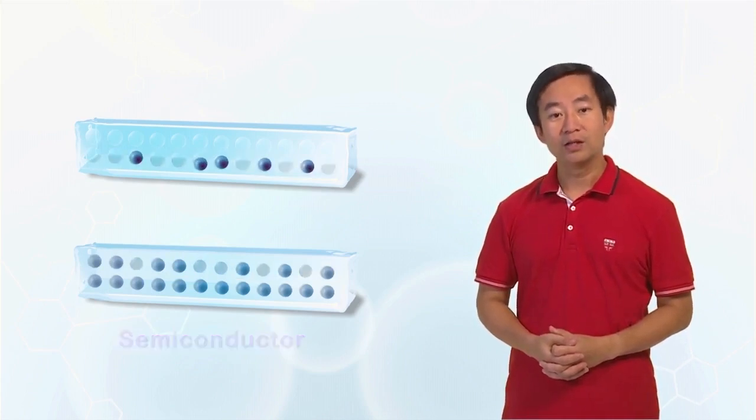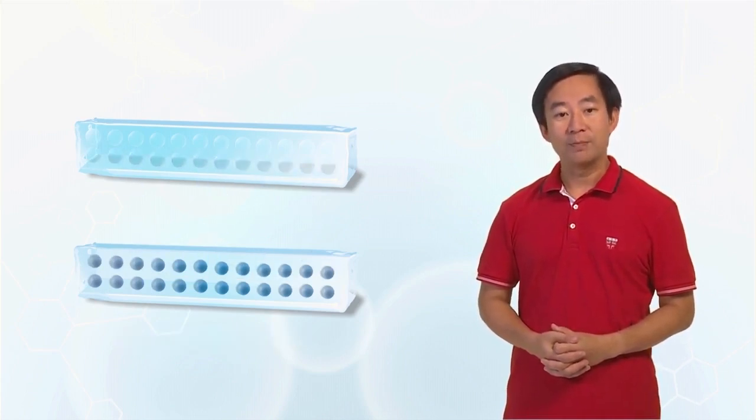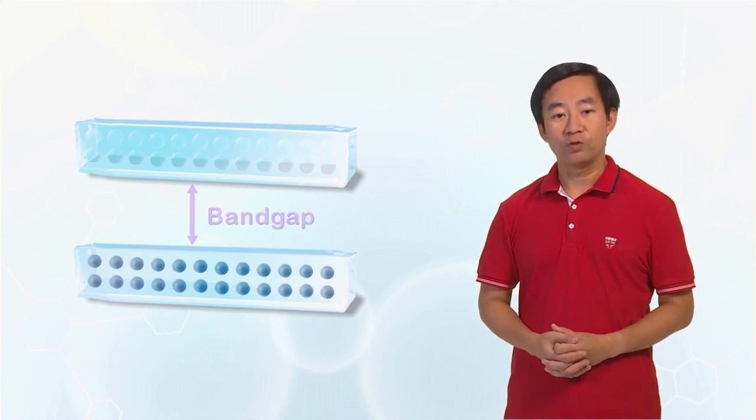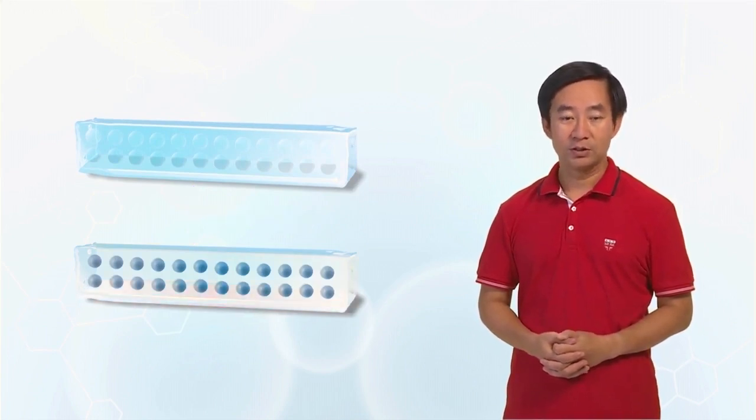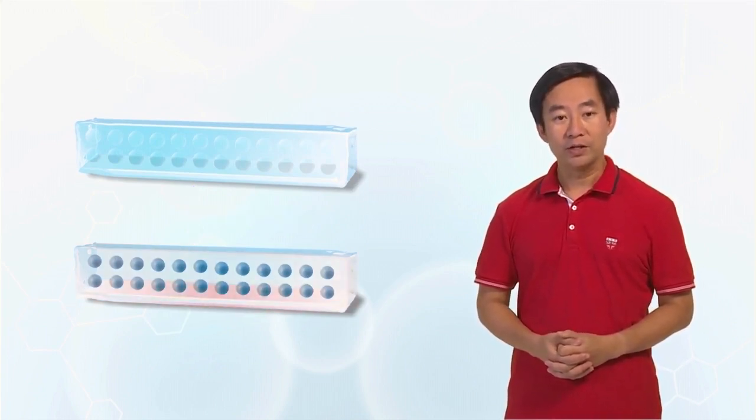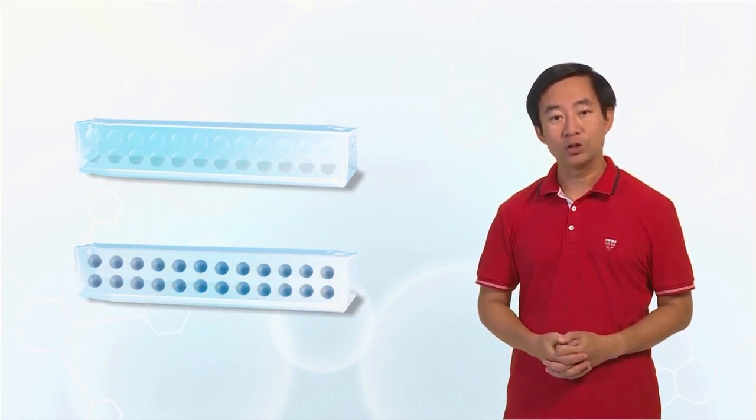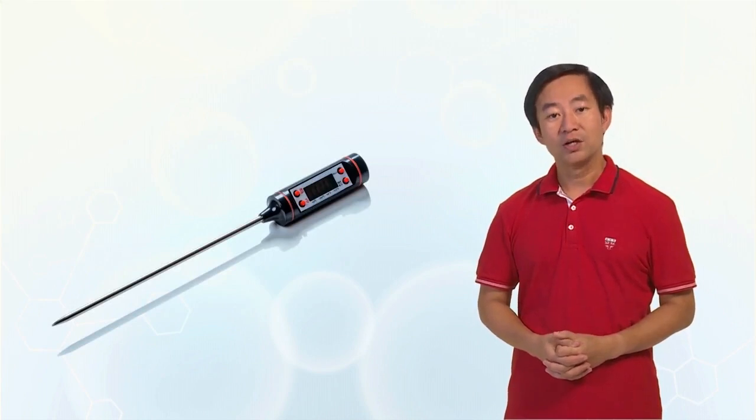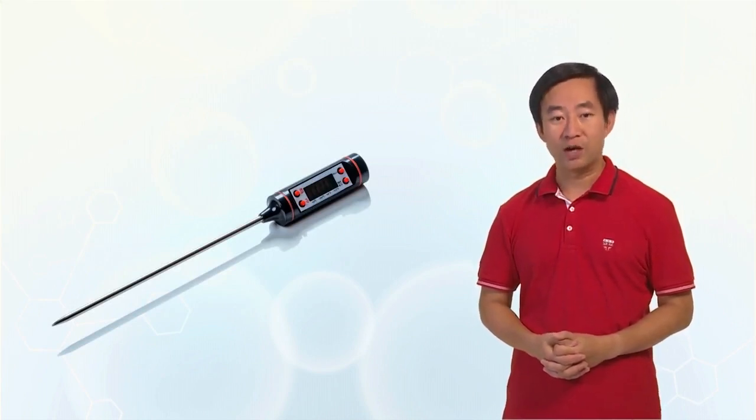A material with a full valence band can be insulator or semiconductor depending on the size of its band gap and the temperature of the operation environment. From this, probably you can think of a simple application of semiconductor material to be used as an electrical thermometer because its resistivity changes with temperature.